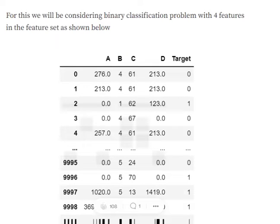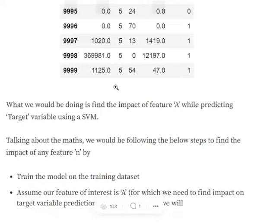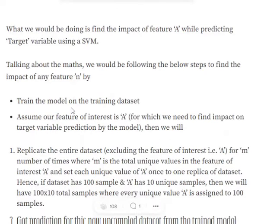The dataset has four columns A, B, C, D and a target that is a binary class. To calculate a PDP, first we need to train the required model that we wish to interpret—be it a neural network, decision tree, or whatever model you wish to train on the training dataset.